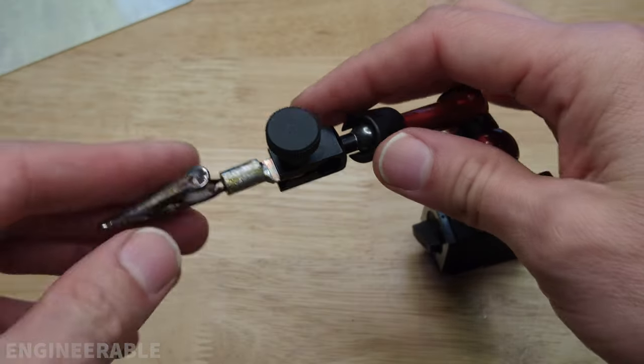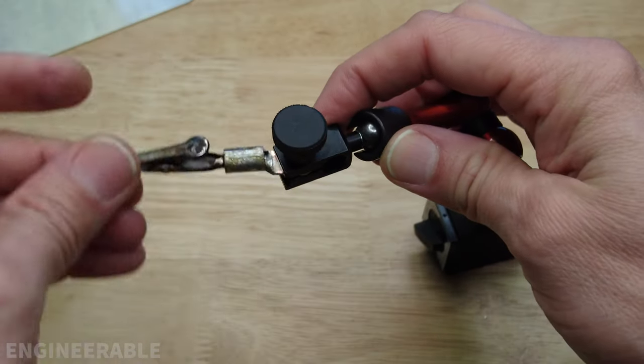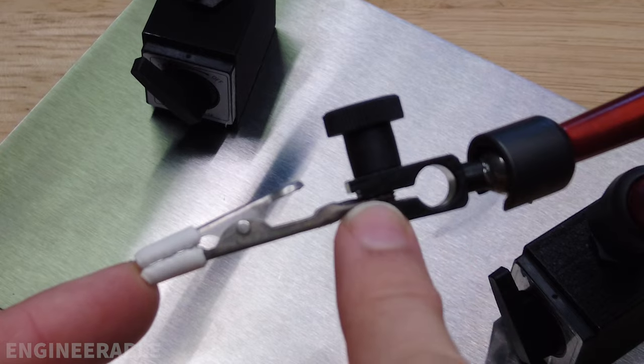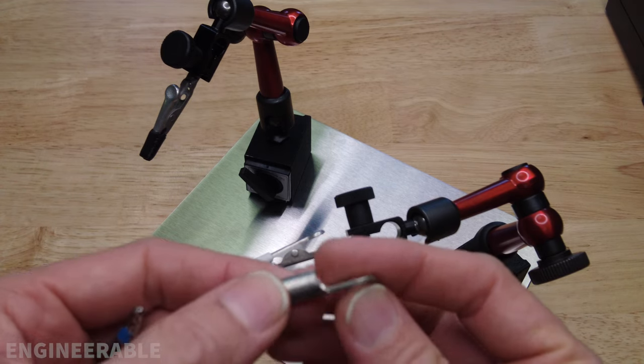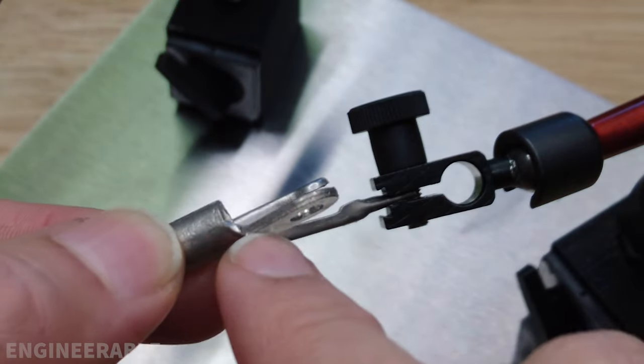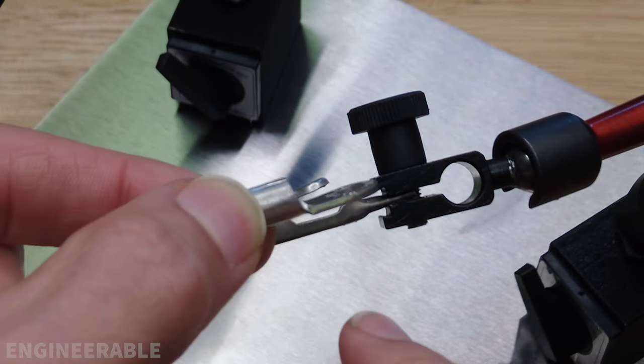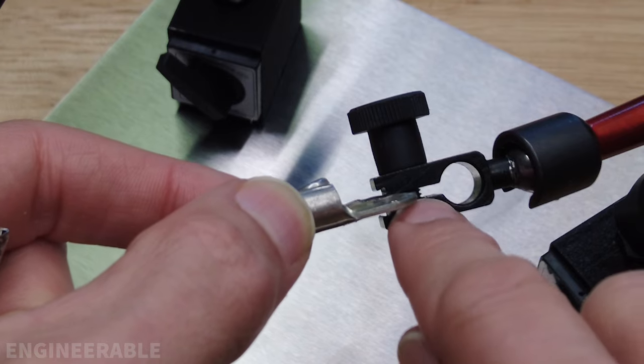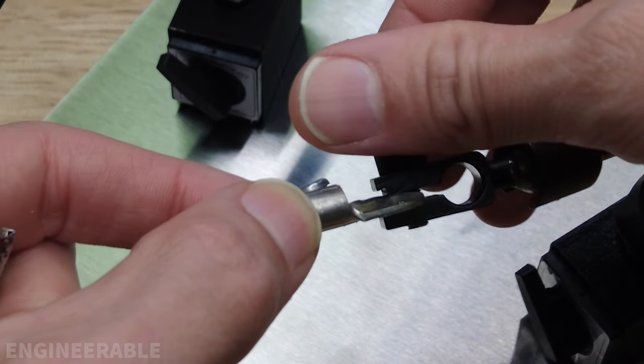Here's another method that can be used to secure alligator clips to the dial indicator holder, and that is to find a ring terminal, one that's the thickest you can find and strongest that fits within the space in this clamp area here.